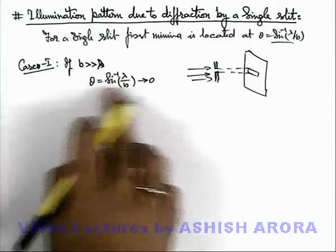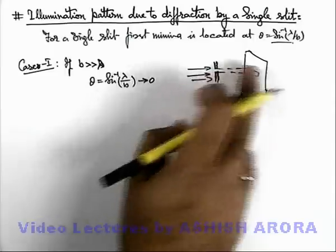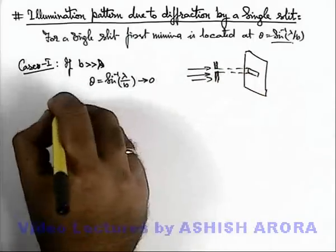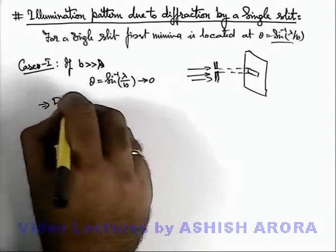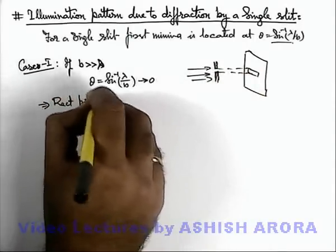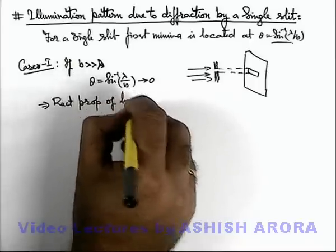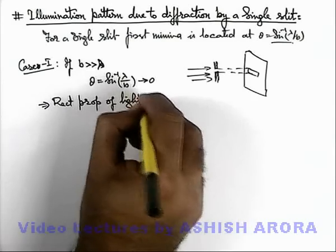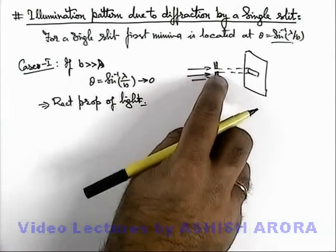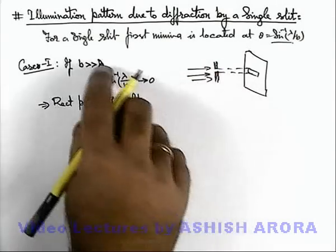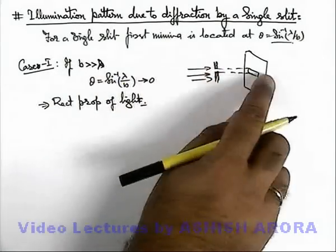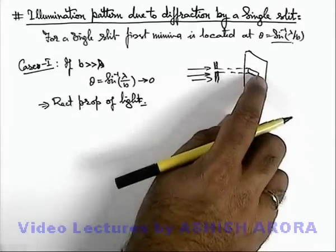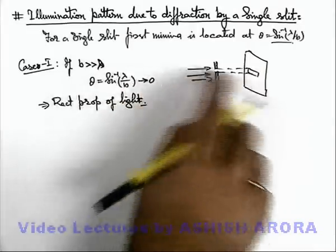So the width of central maxima will be negligible and a patch is obtained which is corresponding to rectilinear propagation of light. This we have initially discussed that whenever the size of obstacles are large or not of the order of wavelength of light, the prominent diffraction is not seen or it cannot be perceptible.